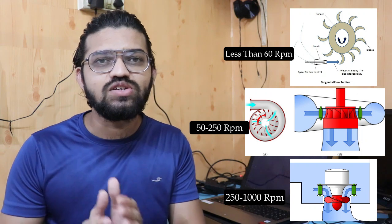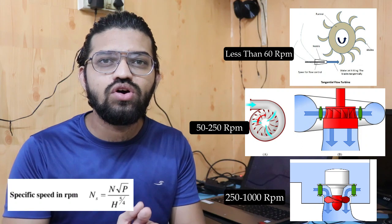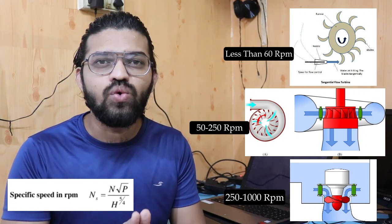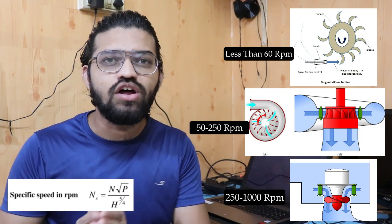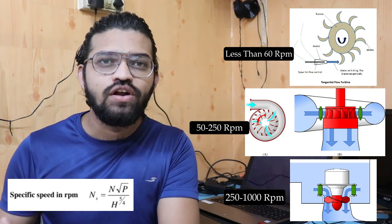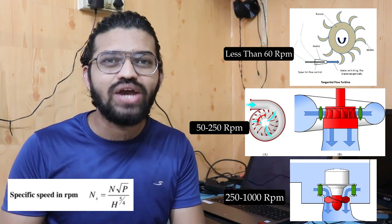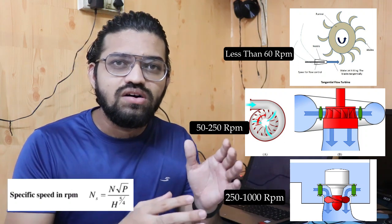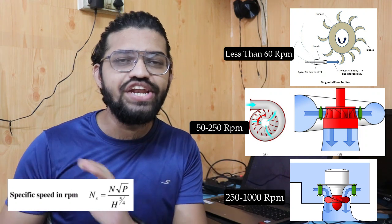The specific speed can be calculated using the formula: Ns = N√P / H^(5/4), where Ns is the specific speed of the turbine, N is the speed of the runner blade, P is the power developed by the turbine in kilowatts, and H is the available head in meters. This formula is used to calculate the specific speed of any turbine, and specific speed can also be used to predict the performance of a turbine.